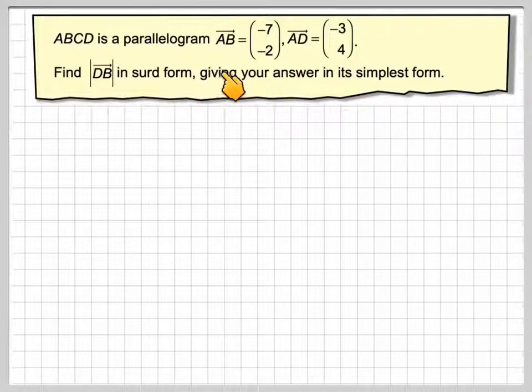ABCD is a parallelogram. Vector AB is (-7, 2), and AD is (-3, 4). Find DB in surd form, giving your answer in its simplest form.